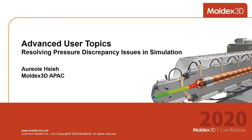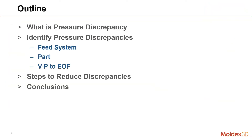Here's today's outline. I'll first introduce the concept of pressure discrepancy and how to read the sprue pressure curve. Next I'll explain how to find where the discrepancies originate from — this section will be separated into three parts: feed system, part, and VP to EOF. Then we'll have the steps to reduce discrepancies, and finally some conclusions.